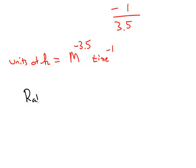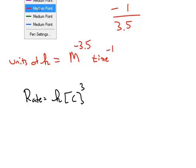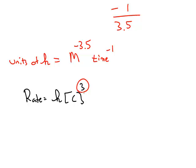If you had a rate law k times c to the third, do the same shortcut. So the overall order in this case is 3. Subtract 1, you get 2. The units of k will be molarity to the negative 2, and then some unit of time to the negative 1.